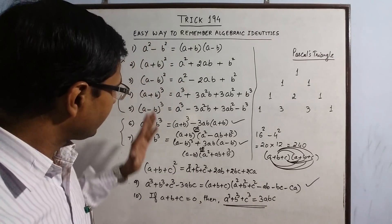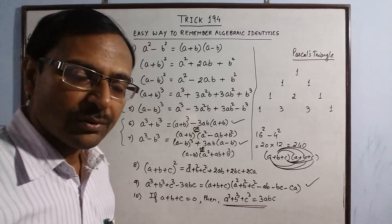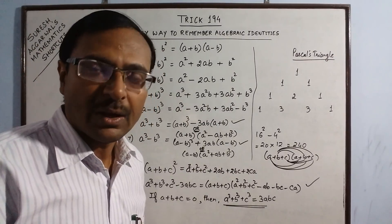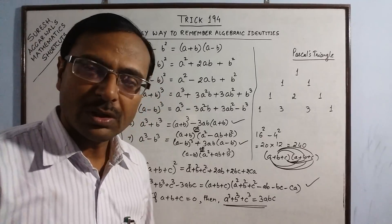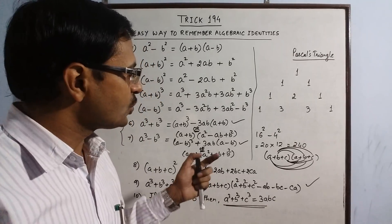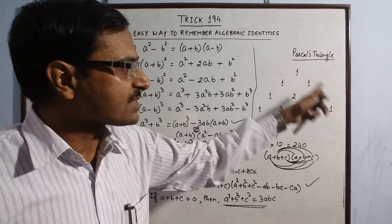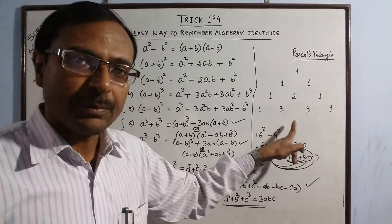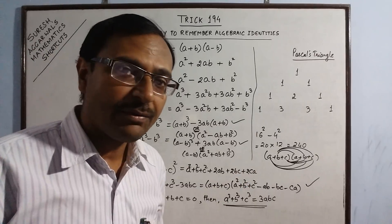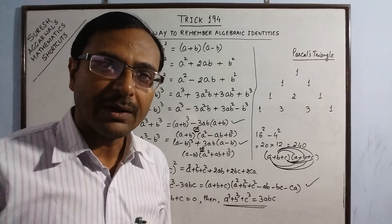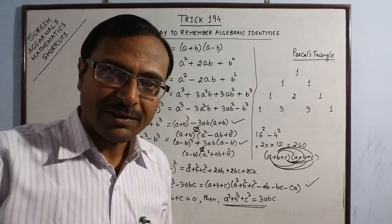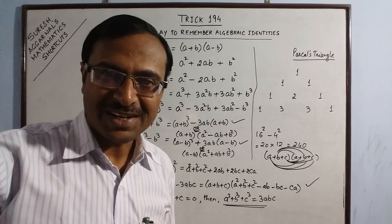So these are 10 identities, very important for class 7th, 8th, 9th, and 10th students. These identities are used in all topics in subsequent classes. At the competitive level, you need to have the method of Pascal's Triangle up your sleeve to derive the formula on the spot if you forget it in exams. If you like the video, share it and subscribe to the channel.